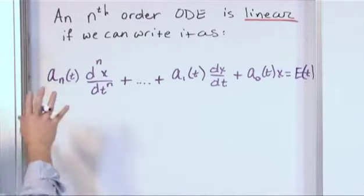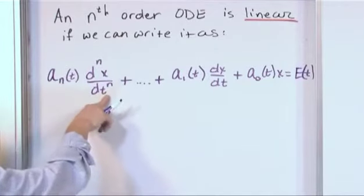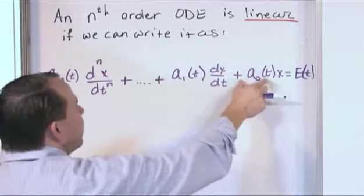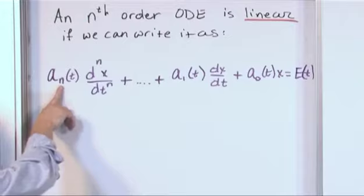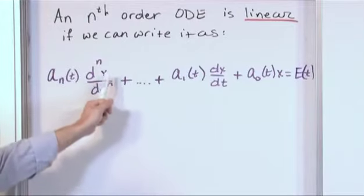Now we have a constant. I call it a constant, but really it's a function of our independent variable time, sitting out in front of every single term. So a sub n here, don't get so confused by that. That follows the same numbering that we have here.